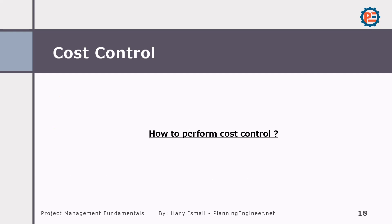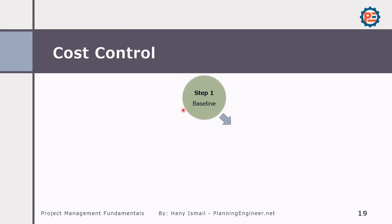So how do we perform cost control? First, you need to have your cost baseline — meaning for each activity in your project, we should know the planned cost that should be paid for it. Then we create forms to collect data, which is very important because you want to collect data in a way that aligns with your baseline.